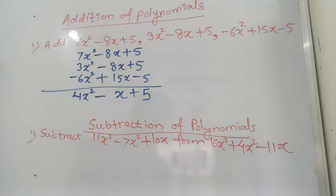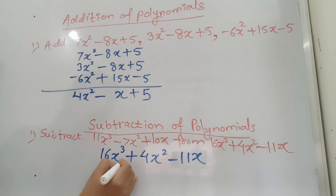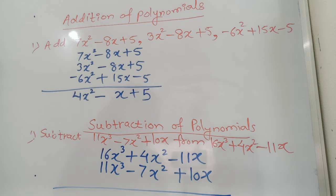Now you can see subtraction of polynomials. Here it is important that we are subtracting from what expression. So this is the expression that we will write down: 16x³ + 4x² - 11x. Now you will write down 11x³ - 7x² + 10x. It is very important to understand that we have to subtract from that expression.